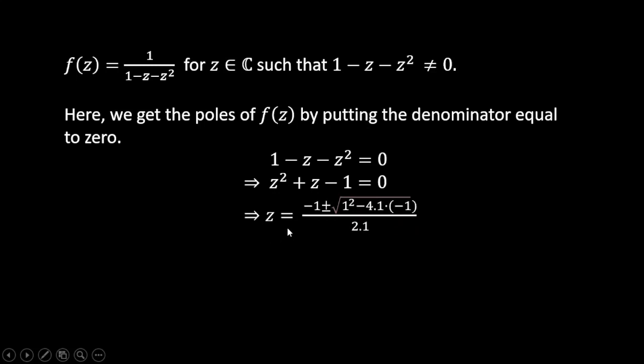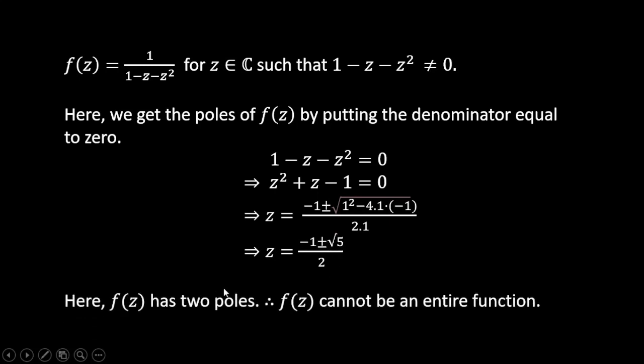So here we can apply the Sridhar Acharya's rule formula, and so we get z = (-1 ± √5)/2. Here f(z) has two poles: (-1 + √5)/2 and (-1 - √5)/2. So f(z) cannot be an entire function.